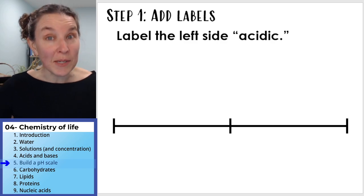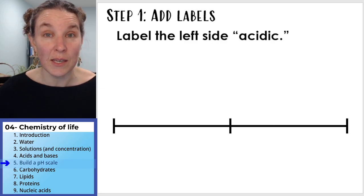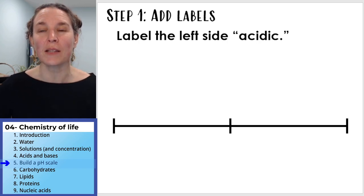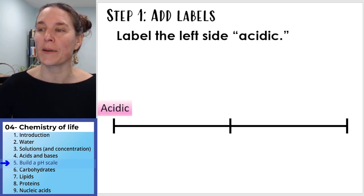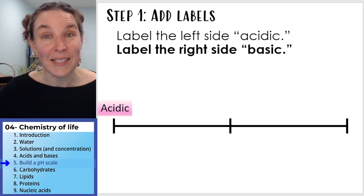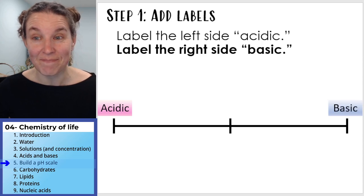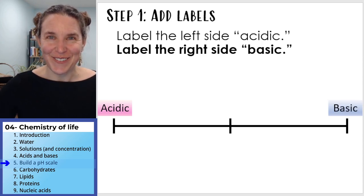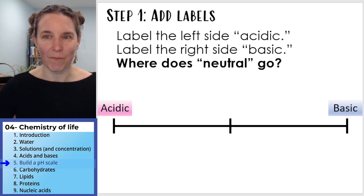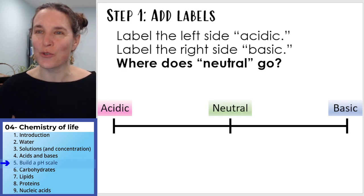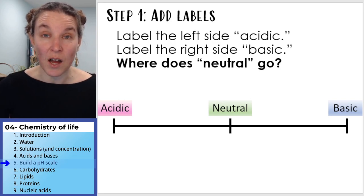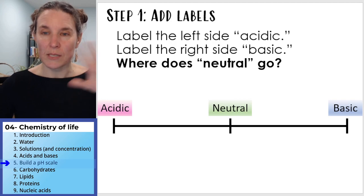The way I'm going to label this scale: I'm going to label the left side 'acidic' and the right side 'basic.' This is easy so far, right? What do you think I'm going to label the middle? Maybe you should put 'neutral' in the middle. You now have labels on your scale.